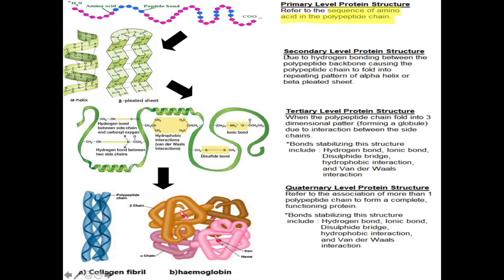For the secondary level protein structure, the polypeptide chain begins to fold into a repeating pattern of helix called alpha helix, or pleated sheets called beta-pleated sheets. These foldings arise due to the interaction between the polypeptide backbone, specifically hydrogen bonding.